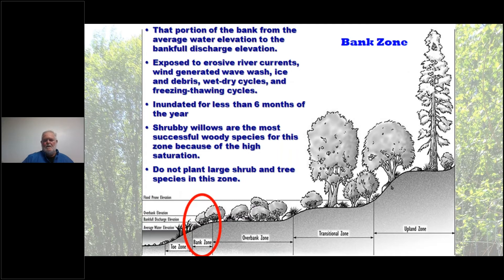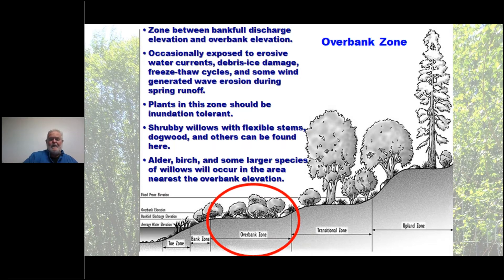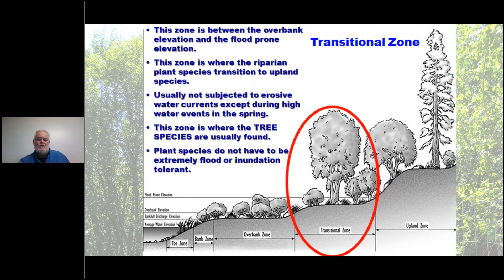The overbank zone or floodplain runs between the bank-full discharge elevation and the overbank elevation. It's occasionally exposed to erosive currents, ice, debris, and wind-generated waves during spring runoff. Water spreads out here like a flooded pasture, so plants need inundation tolerance. Flexible-stem willows and dogwoods work here. Avoid single-stem large willows or multi-stem large species; alder, birch, and other large species can be planted at the upper end of this zone.